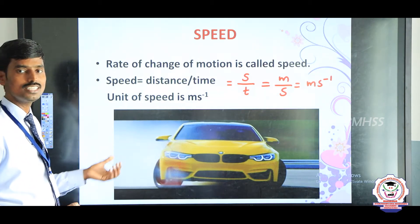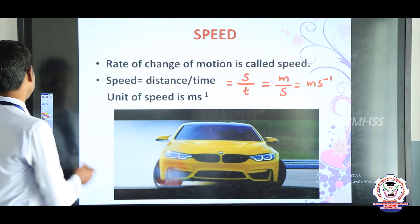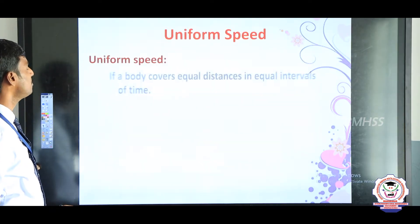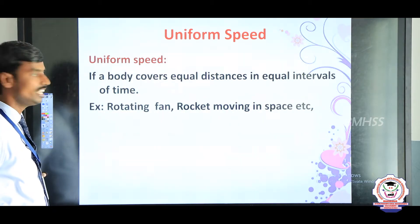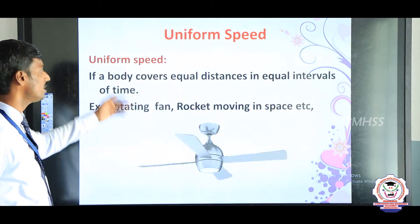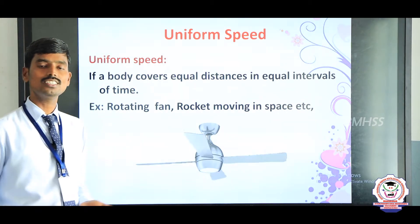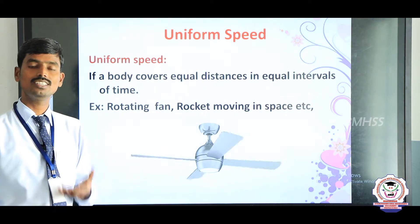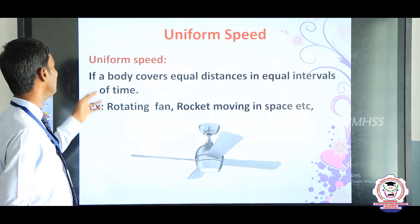The unit of speed in the CGS system is centimeter second inverse. The next concept is uniform speed. Uniform speed is nothing but when a body covers equal distance in equal intervals of time — this is called uniform speed.